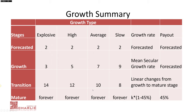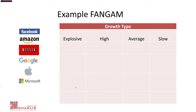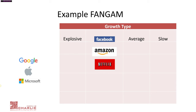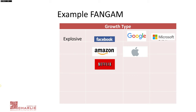Let's look at some examples of how Bloomberg allocates companies into different growth types — you can pause the video and think about it. Facebook is in the higher growth stage, Amazon is also high growth, Netflix high growth as well, Google is average growth, Apple is also in average growth, and Microsoft is in the slow growth category. You may disagree with these allocations, but what's important is how you can justify your own view through further fundamental analysis.